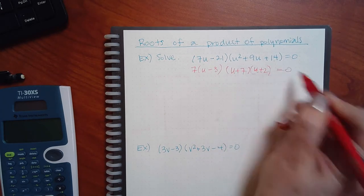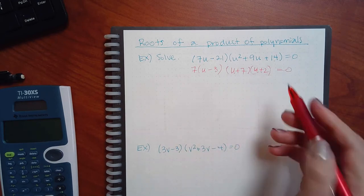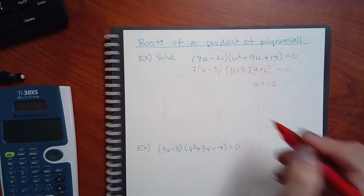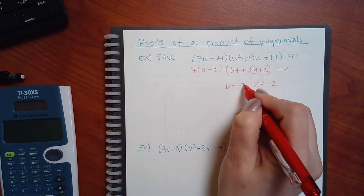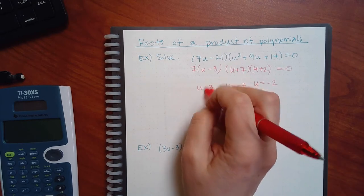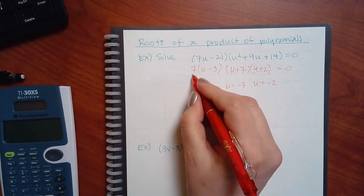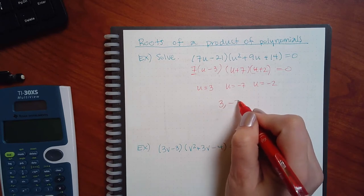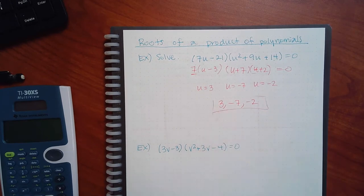Now that it's all factored, you set each factor equal to 0. Here I get u = −2, here u = −7, and here u = 3. Does this factor have any u's in it? No. So you can't set that equal to 0 — 7 is not going to equal 0 ever. Don't worry about the coefficient in front. So I have three solutions.